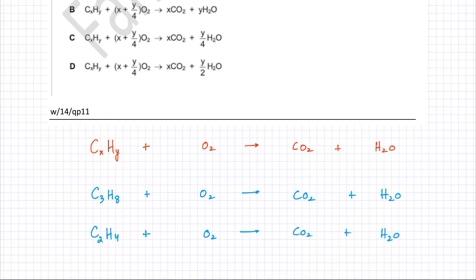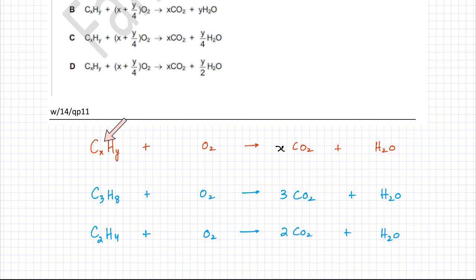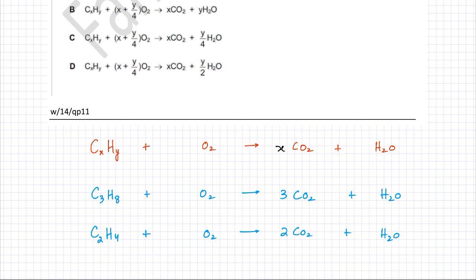There are three carbons in C3H8, so there should be three CO2s to balance the carbons. For C2H4, there are two carbons, so there would be two CO2 molecules. Using the same logic, if there are X carbons, there should be X carbon dioxide molecules — that's how the carbons are balanced. The number of carbons in the formula equals the number of CO2 produced.